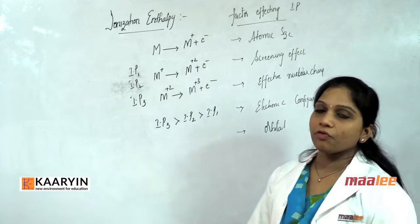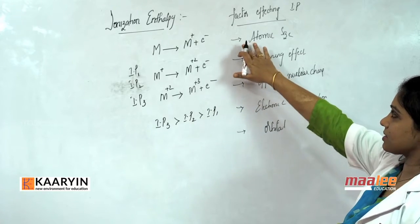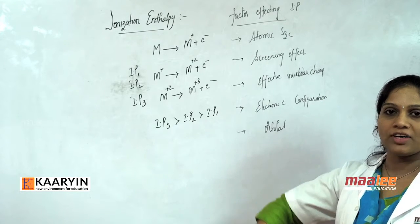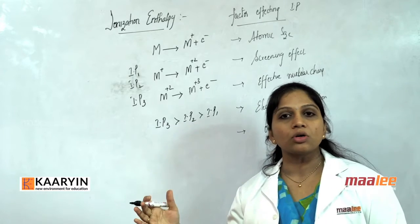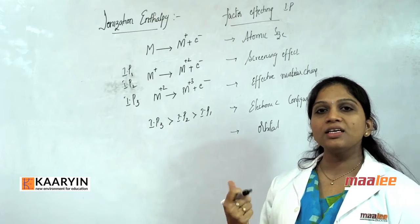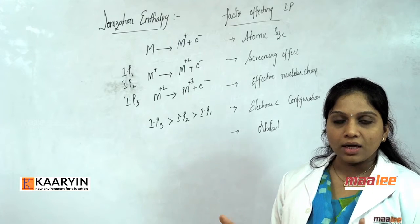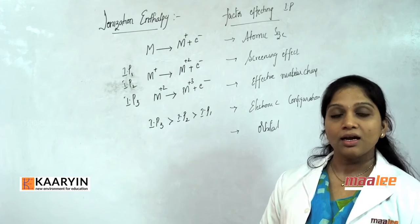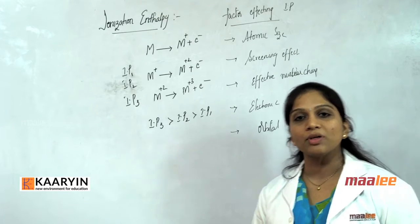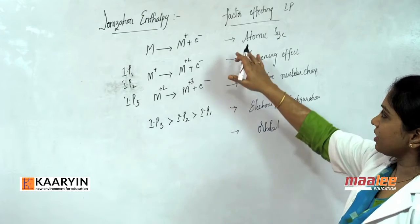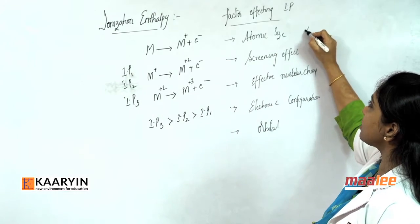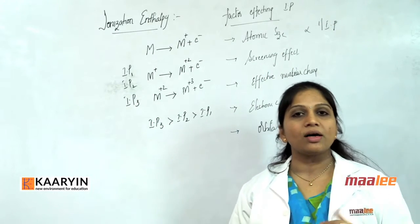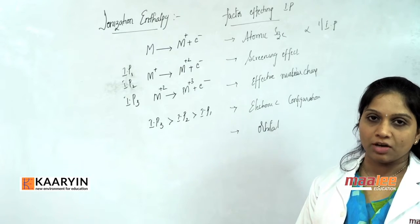Let us study the first factor: atomic size. If atomic size is more, the nuclear influence over the outermost electron reduces, so it is easy to remove the electron. If atomic size is less, nuclear attraction over the outermost electron is very high, making it difficult to remove. Therefore, atomic size is inversely proportional to ionization potential — if atomic size is more, IP values are less, and vice versa.